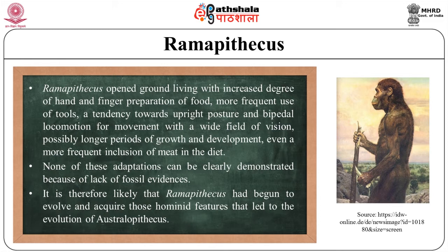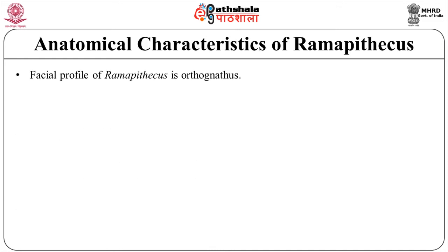What we know is that these adaptations were clearly present by the time the next phase of hominid evolution — the Australopithecus — had begun. Ramapithecus had begun to evolve and acquire those hominid features that led to the evolution of Australopithecus. Now let's see the significant anatomical characteristics of Ramapithecus. Their facial profile is orthognathous — that is, the profile is nearly vertical with straight jaws.